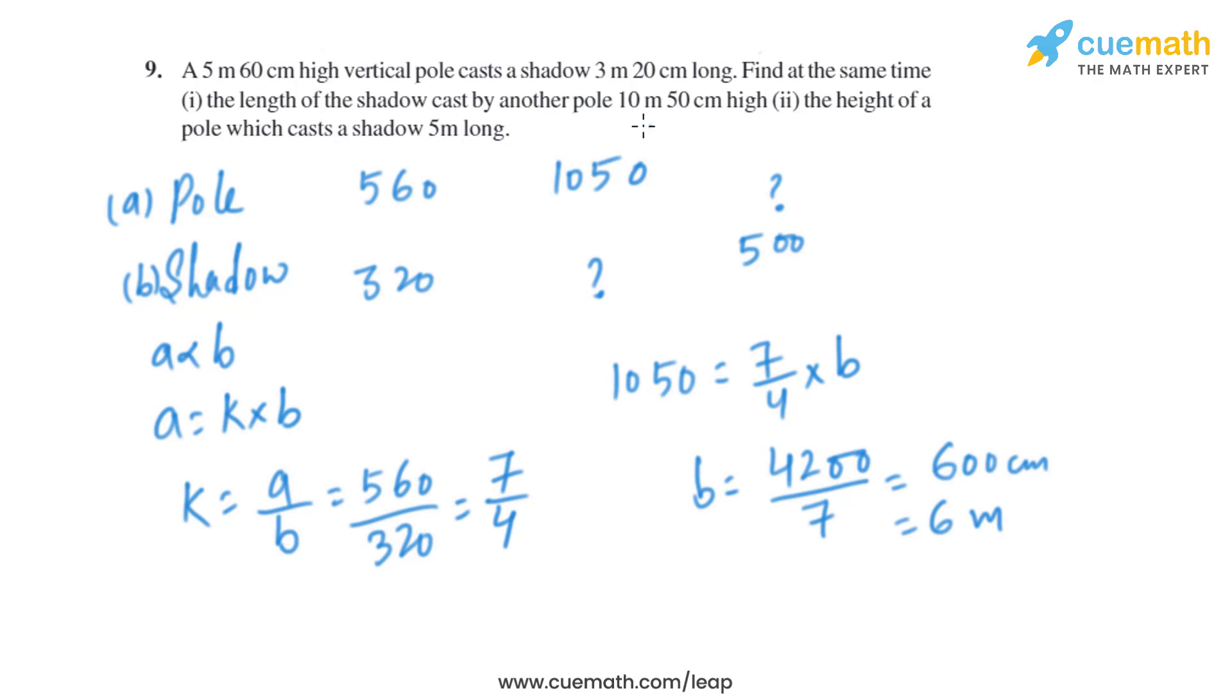Or we can say 6 meter. So when the height of the pole is 10 meter and 50 centimeter, the length of the shadow will be 6 meter.